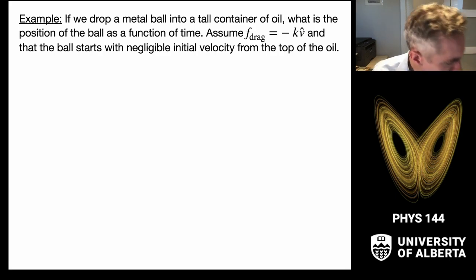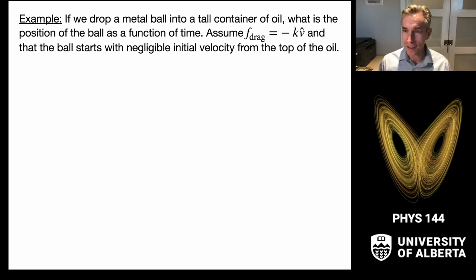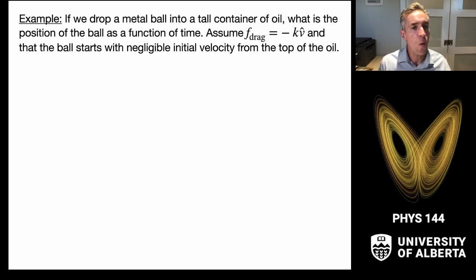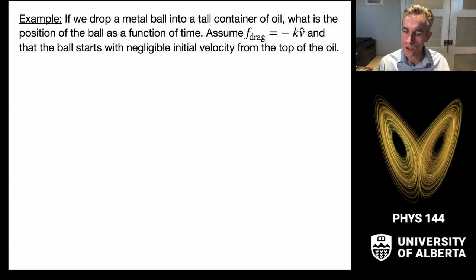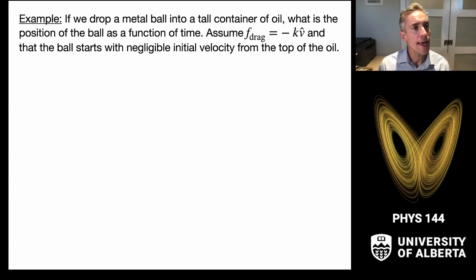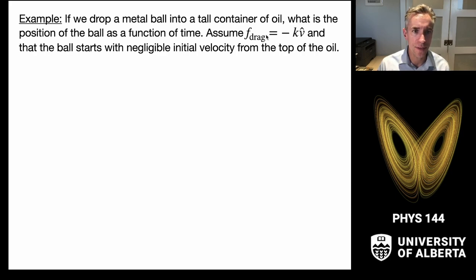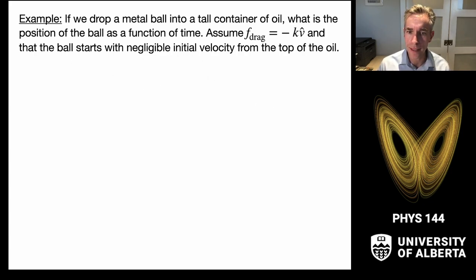Now for an illustrative example of an object in fluid resistance using the Stokes drag model. We imagine dropping a metal ball into a tall container of oil and ask: what is the position of the ball as a function of time? Assume the drag force is F_drag = -k·v (vector), starting with zero initial velocity at the top of the oil.